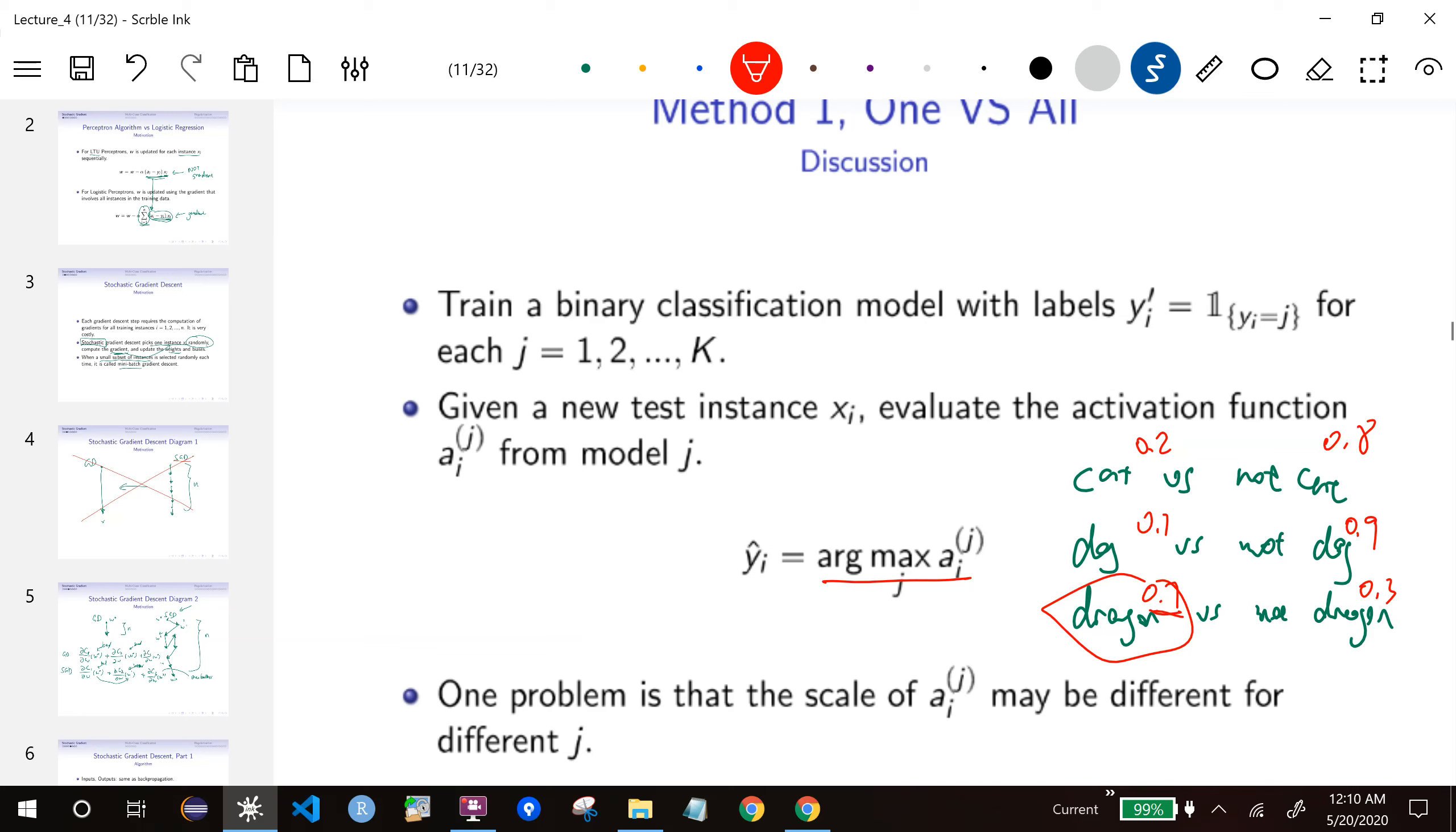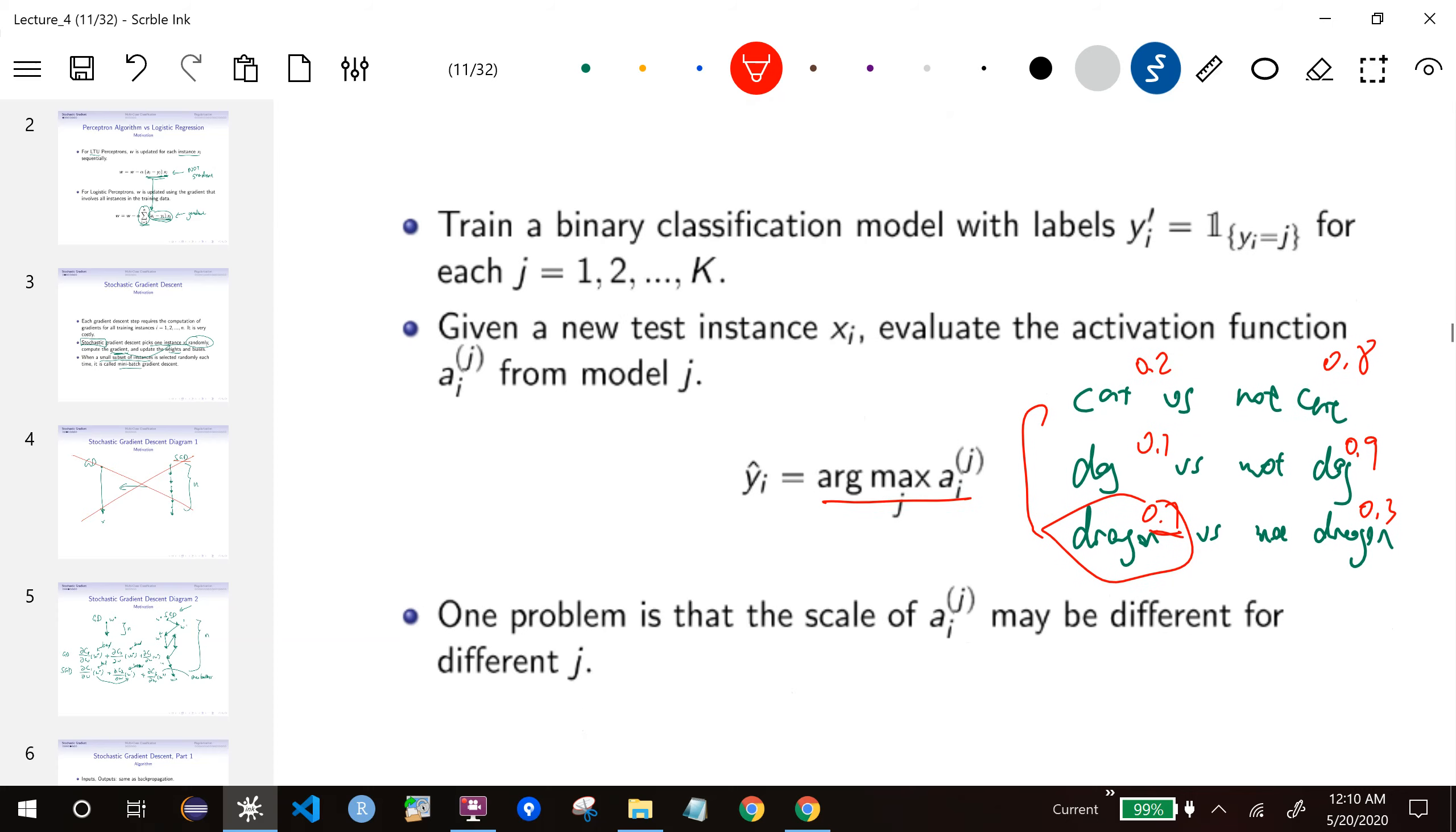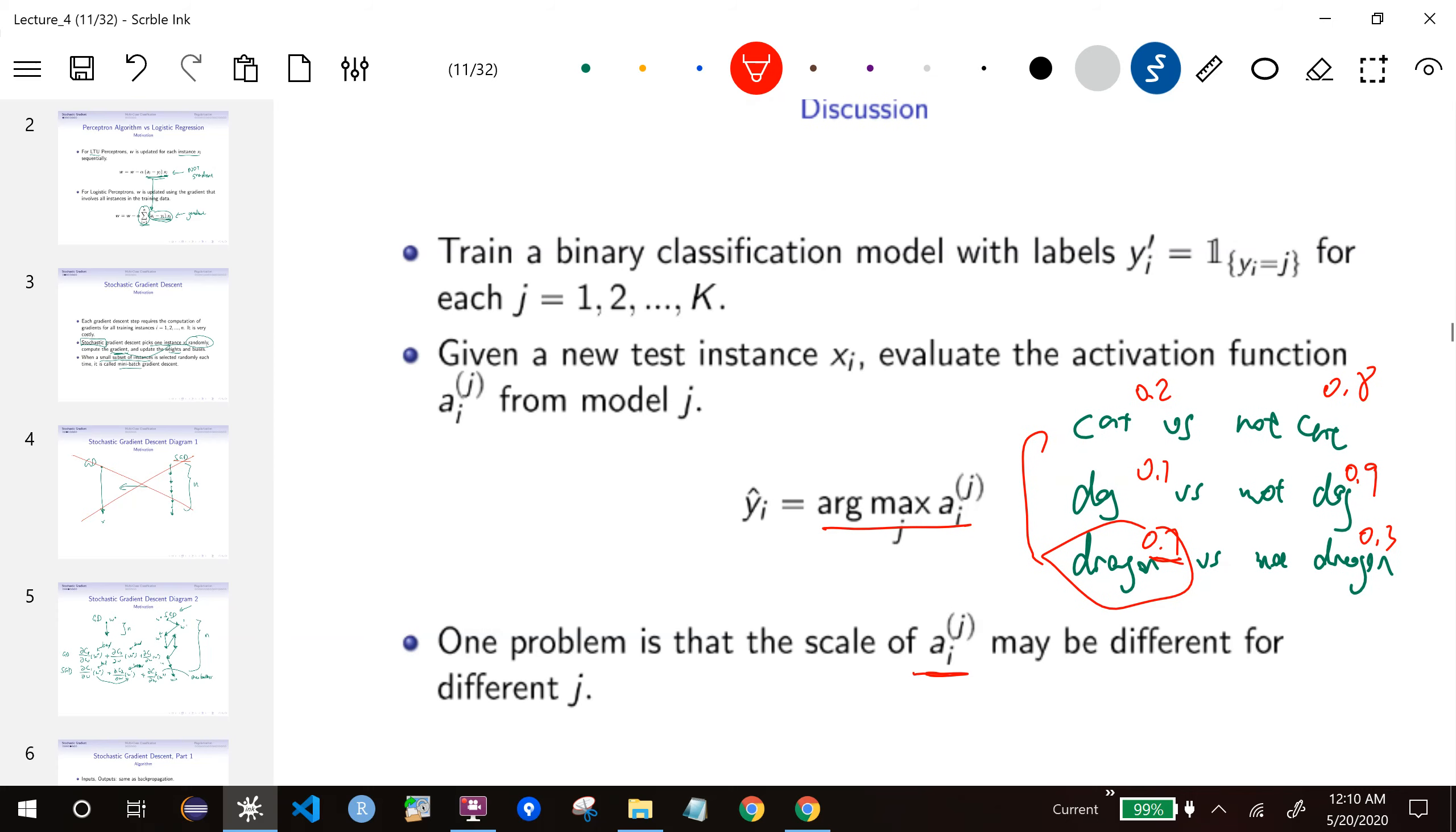This looks okay, but there's a problem with this. The scale of these activations are different. So when I say 20% a cat and 10% a dog, they are not comparing the same things. We cannot compare these two numbers. So saying we want to find the max doesn't really make a lot of sense. This is the problem, and we probably should not do this.